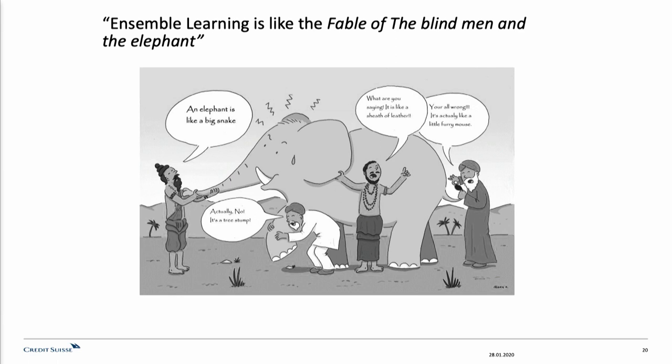Ensemble learning is very similar to the fable of the blind man and the elephant. This is a tale that comes from India, basically saying that different perspectives lead to different results.